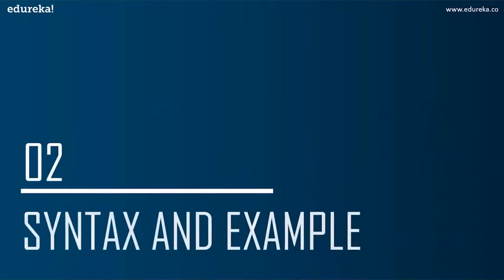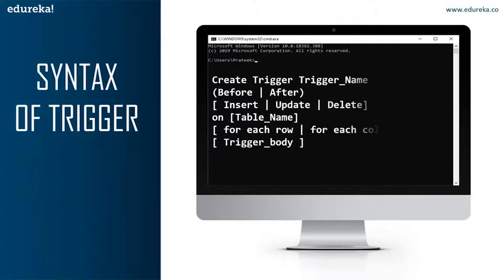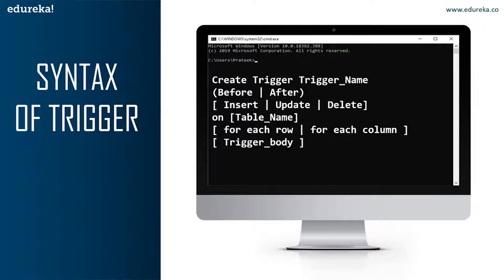The next topic is the syntax and example of a trigger. The first part is CREATE TRIGGER — these two keywords specify that a trigger block is going to be declared. Next is the trigger name, which has to be unique and shouldn't repeat. The next part is BEFORE or AFTER, which specifies when the trigger will be executed — either before an ongoing event or after it.